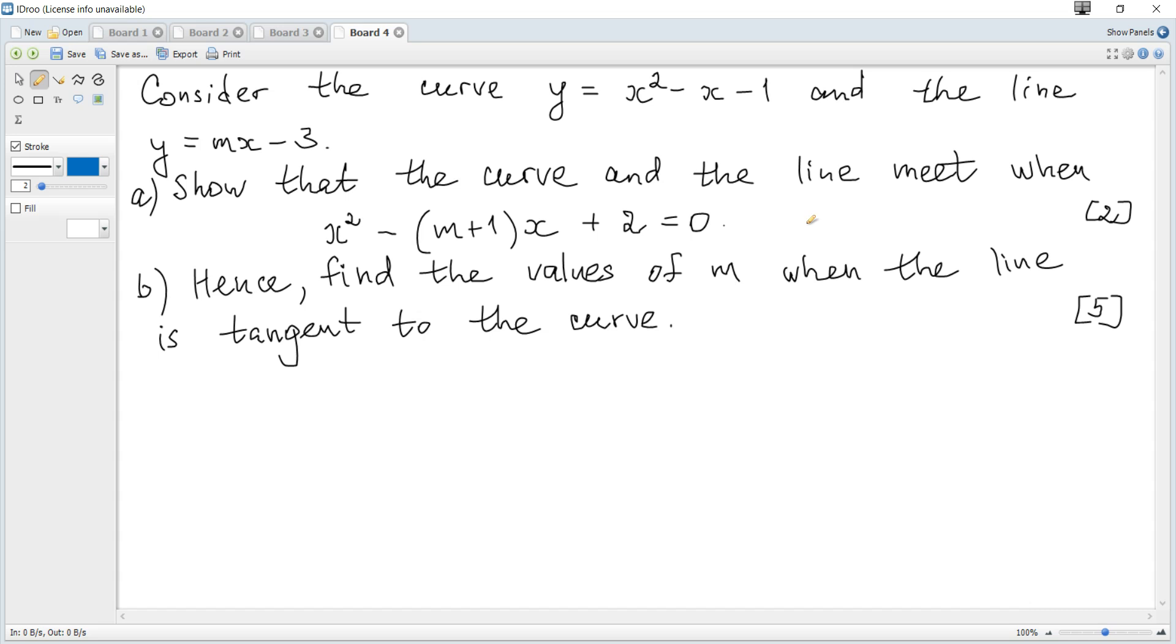Consider the curve y equals x squared minus x minus 1 and the line y equals mx minus 3. Question a shows that the curve and the line meet when x squared minus (m plus 1) multiplied by x plus 2 equals 0.